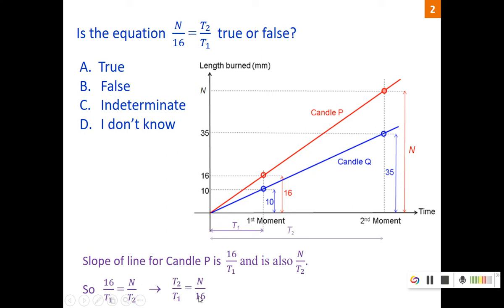We can conclude 16 over t1 equals n over t2. If we simplify by interchanging 16 and t2, you will get this proportion. And then we write the n over 16 in front, interchange the left and right side, you will get what we want. So the answer for this is true.